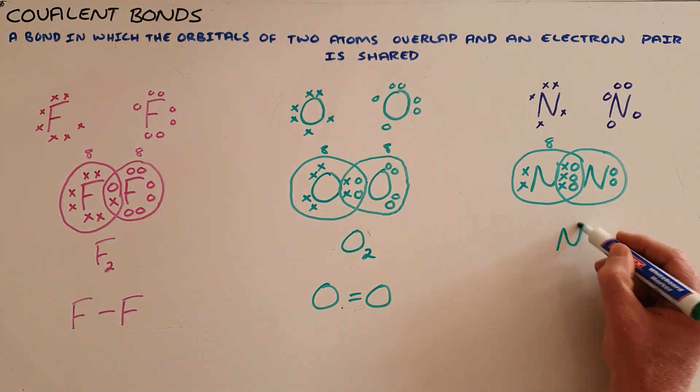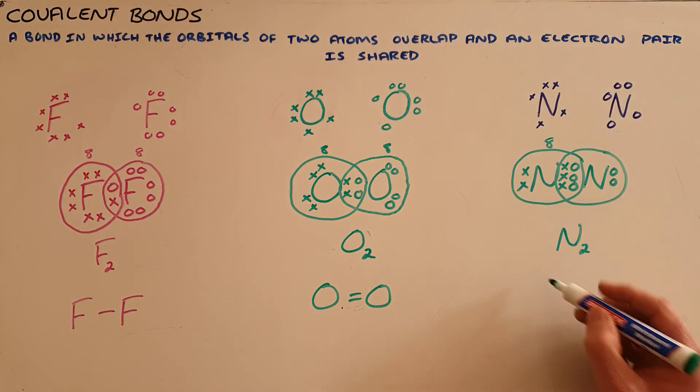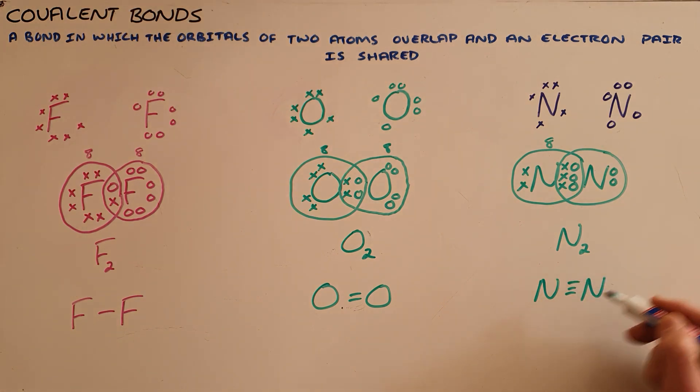Once again we know that nitrogen is a diatomic element and we represent that triple covalent bond with three lines in Cooper structure.